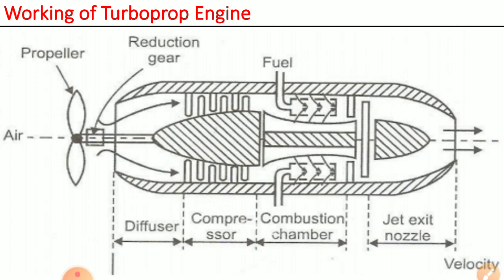This is the setup of the turboprop engine. The engine consists of a propeller shaft, diffuser, compressor, combustion chamber, turbine, and nozzle. In the turbojet engine there is a diffuser, compressor, combustion chamber, turbine, and nozzle. In the turboprop engine, one more part is added: the propeller shaft.